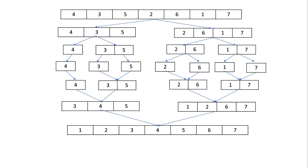Let me show you an example. We take an array of seven elements and split it into two: three elements in the first half and four in the second half. We continue splitting further — on the left into one and two elements, and on the right into two and two. After further splitting, we have individual elements: 4, 3, and 5 on the left, and 2, 6, 1, and 7 on the right. All elements are now separated.